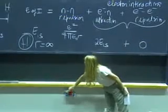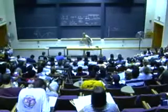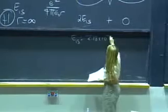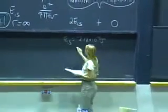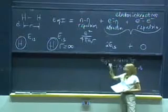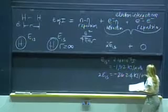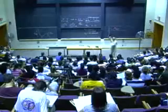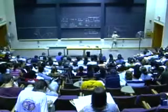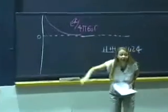E sub 1s is equal to minus 2.18 × 10⁻¹⁸ joules, or in kilojoules per mole, minus 1,312 kilojoules per mole. And if we have two of them, two times E sub 1s is minus 2,624 kilojoules per mole. So I've calculated what the electron interaction energy is at R equal infinity — that's minus 2,624, the same number as the separated hydrogen atom limit.